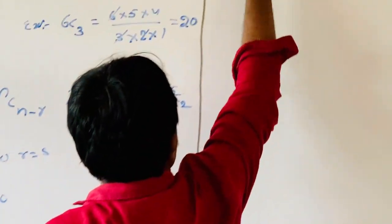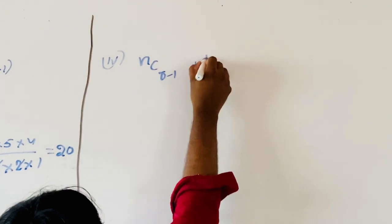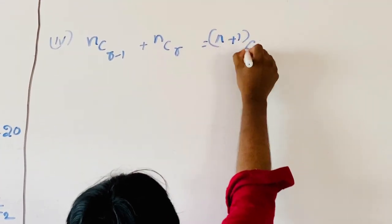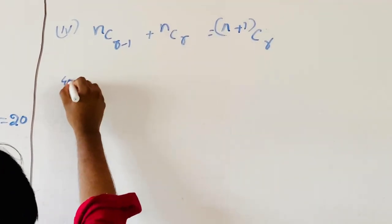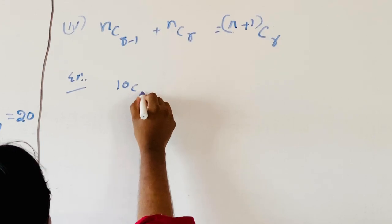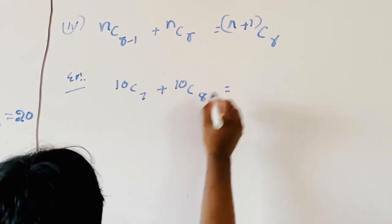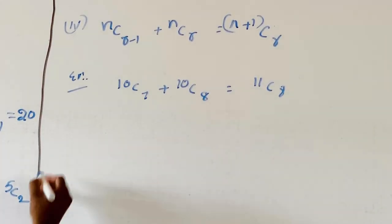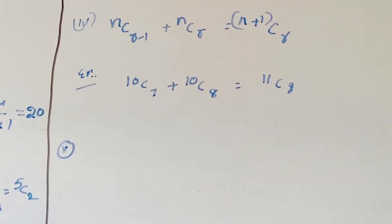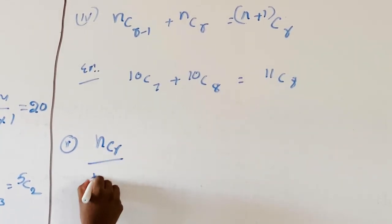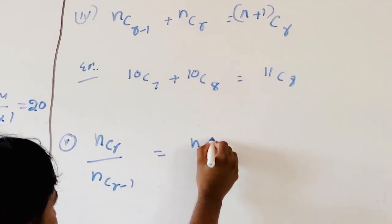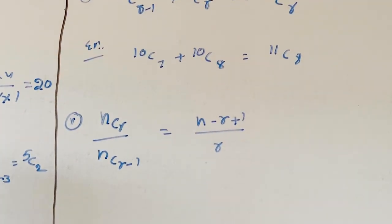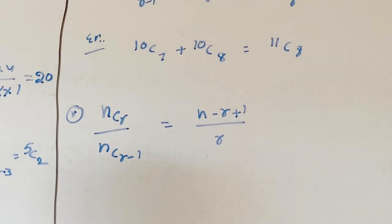Another formula: NC(R−1) + NCR = N+1CR. Also, NCR / NC(R−1) = (N−R+1) / R.